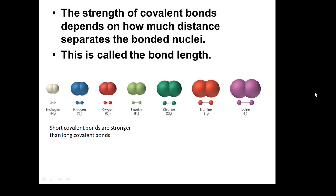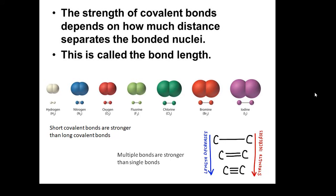What do the strength of covalent bonds depend on? Well, they'll depend on the distance between the nuclei. And that's called the bond length. And basically, they'll be stronger if the nuclei are closer - short covalent bonds are stronger than long covalent bonds. So it depends on the bond length. The shorter the bond length, the stronger the bond. And then multiple bonds, like double bonds, are stronger than single bonds. And triple bonds are stronger than double bonds. So it depends on the bond length and whether it's a single or a double or a triple bond.